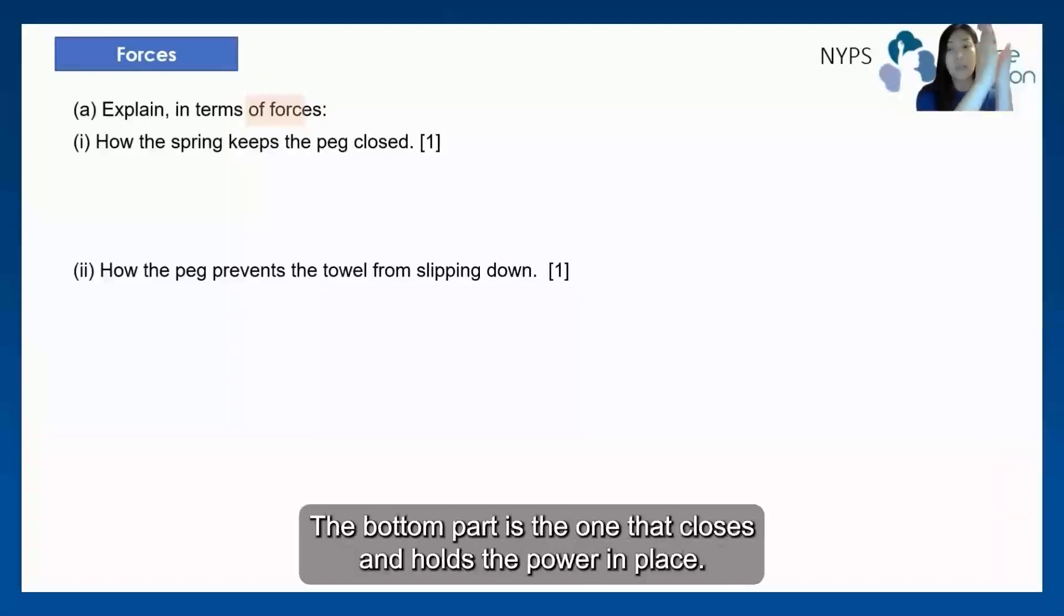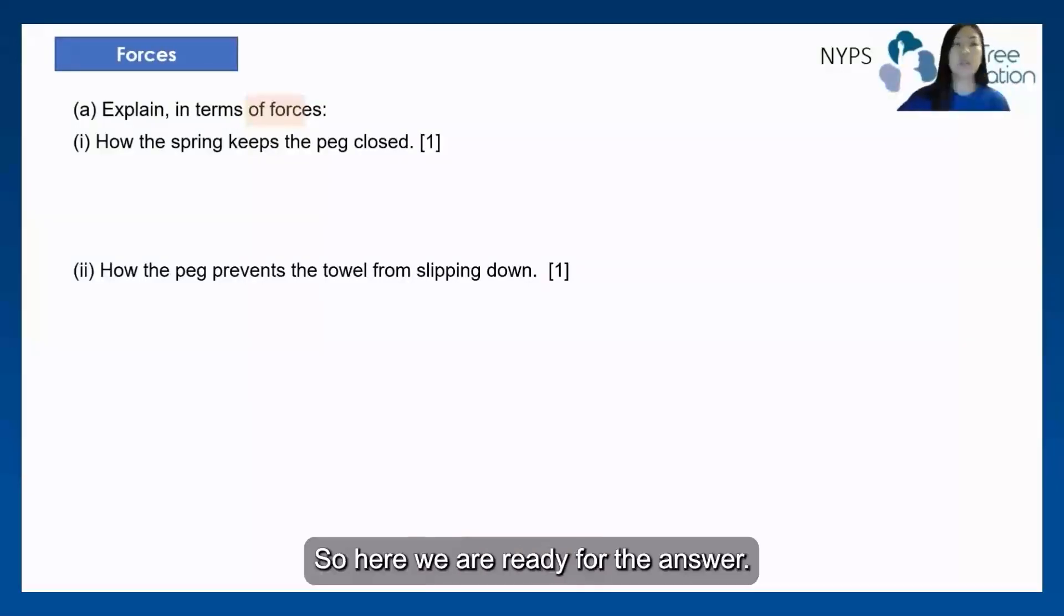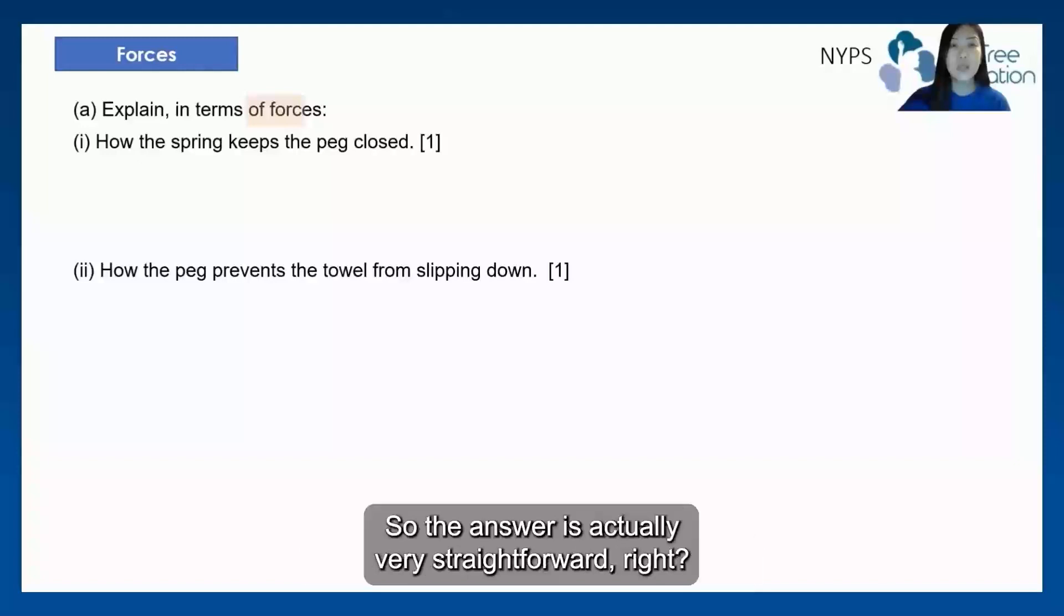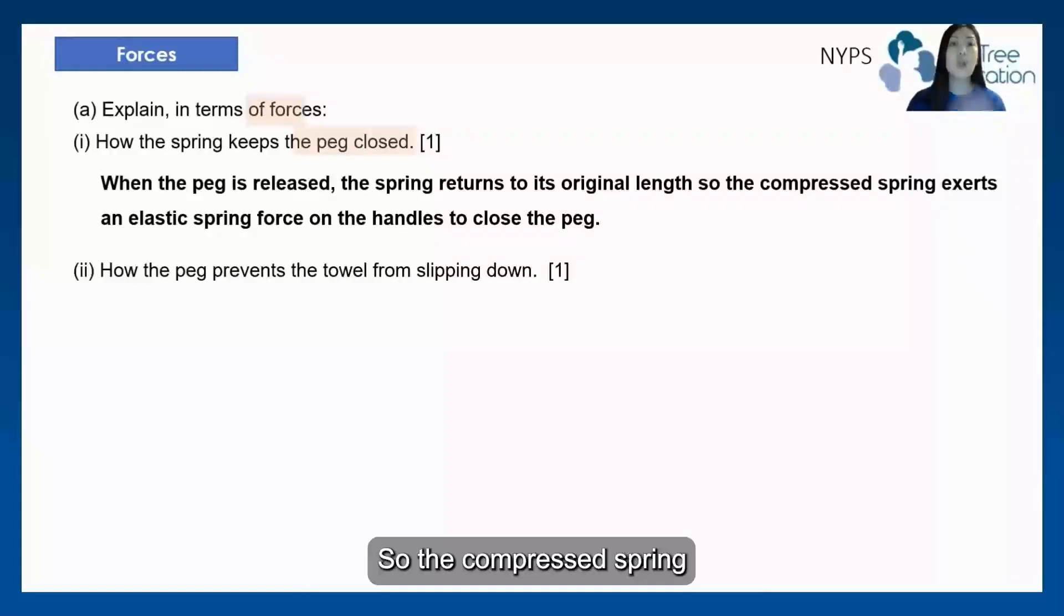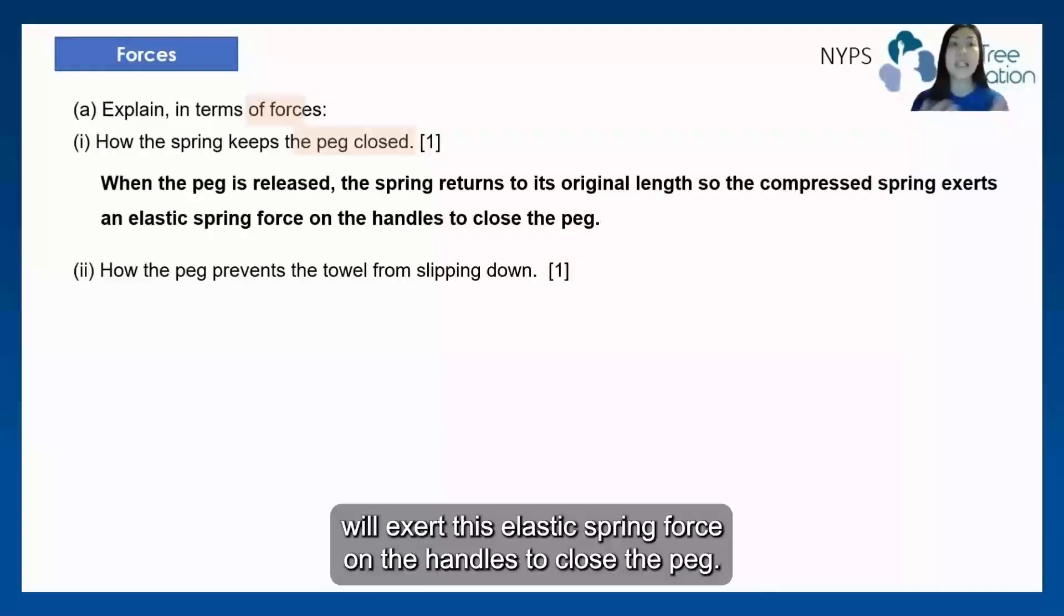And because it goes back to the V shape, the bottom part is the one that closes and holds the towel in place. Okay, so here we're ready for the answer. So the answer is actually very straightforward, which is when the peg is released, the spring returns to its original length. So the compressed spring will exert this elastic spring force on the handles to close the peg.